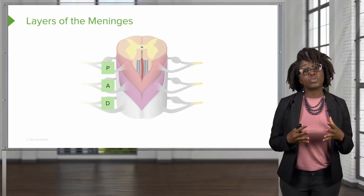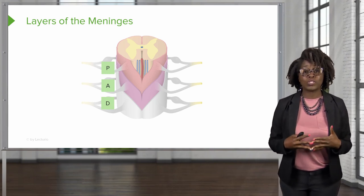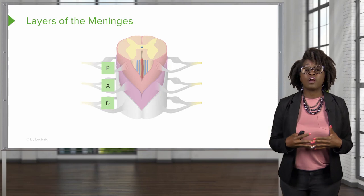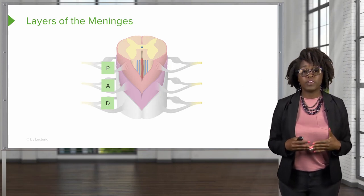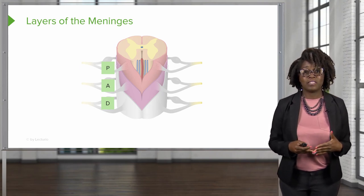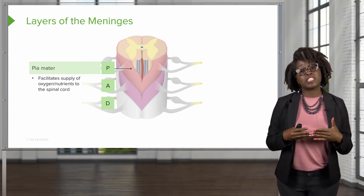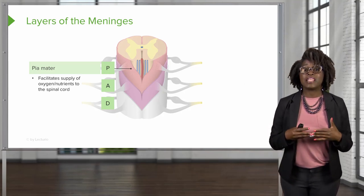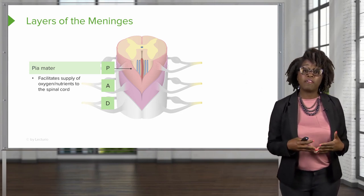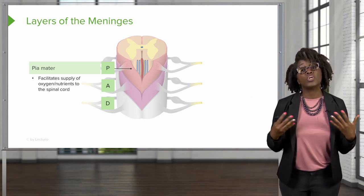Now let's take a closer look at the connective tissue layer surrounding the spinal cord, known as the meninges. The meninges is composed of three layers. Going from the deepest to the most superficial, you get the mnemonic PAD. P stands for Piamater, which is a transparent connective tissue layer that adheres to the surface of the spinal cord and contains blood vessels, supplying oxygen and nutrients to the spinal cord.